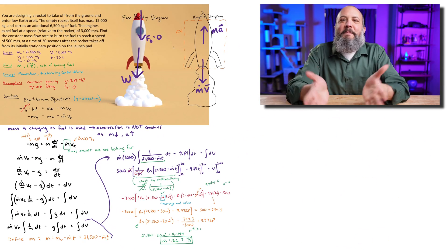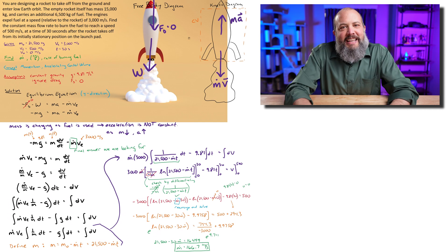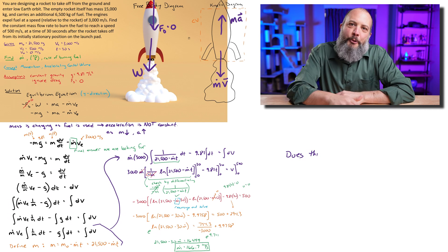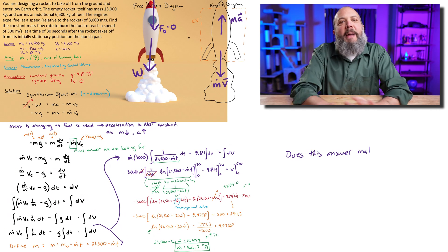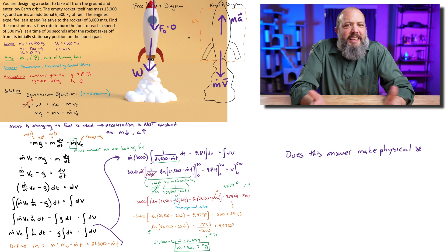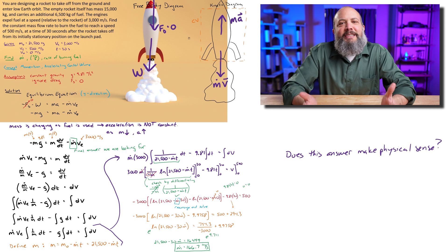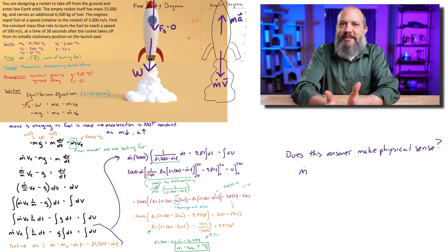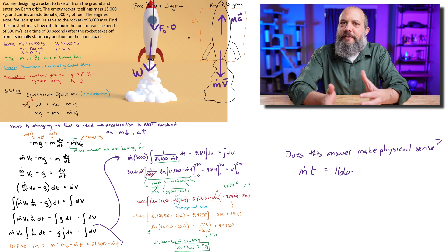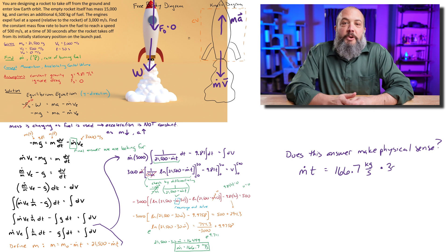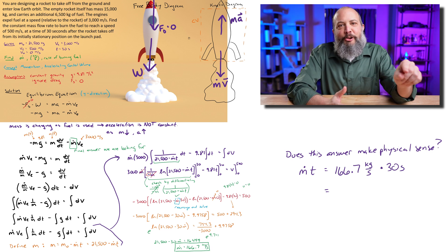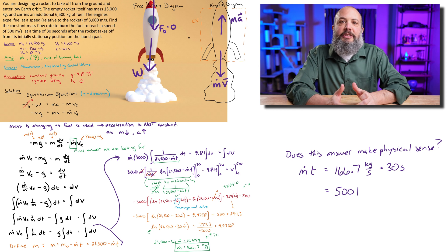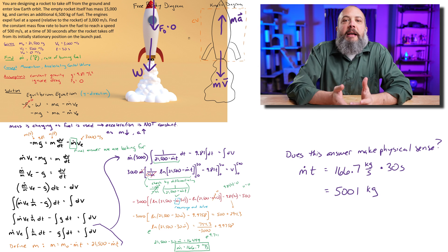And so does that answer make sense? There's a lot of calculus involved, calculator work. There were a lot of opportunities to make a math error along the way. And so the easiest way to figure out whether this answer makes sense is just to look at the size. Does it make sense that this much fuel could have been spent in 30 seconds? So 166.7 kilograms per second times 30 seconds is 5,000 kilograms of fuel.